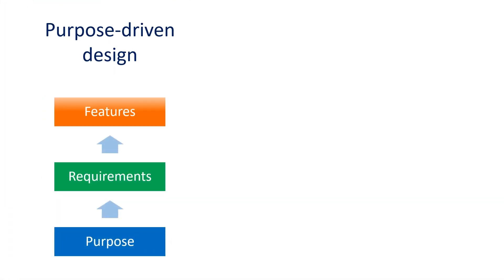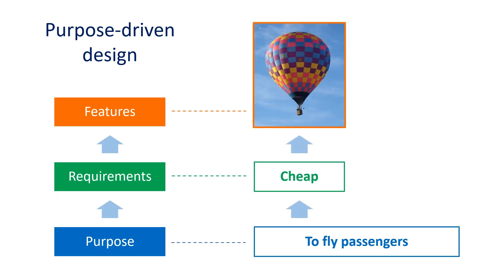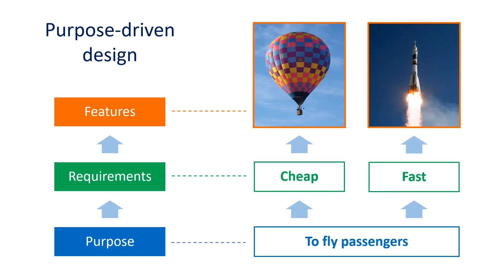A system design with a purpose-driven approach starts with definition of purpose, then proceeds to requirements, and concludes with features — these three aspects of the system have to be aligned with each other. For example, when designing a flying object, if the only requirement is to provide cheap flights, the design could conclude with features that describe a hot air balloon. If the requirement is instead to fly very fast, the resultant features could depict a rocket. This illustrates that the selected purpose and requirements shape the final design features of a given system.